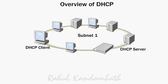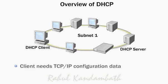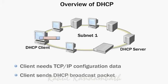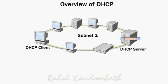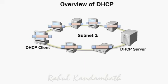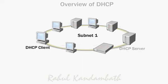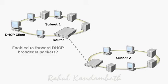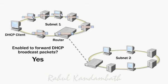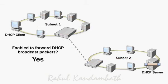For example, when a client is added to the network, the client requires a TCP/IP configuration for the specific subnet. The client sends a DHCP broadcast packet that inquires about the availability of DHCP servers that can provide TCP/IP configuration. When an available DHCP server receives the request, the DHCP server responds and offers TCP/IP configuration data to the client. If a DHCP server is not on the local subnet, you can help ensure that hosts are able to obtain TCP/IP configuration data by configuring a router to forward DHCP broadcast packets to a DHCP server on a remote subnet.